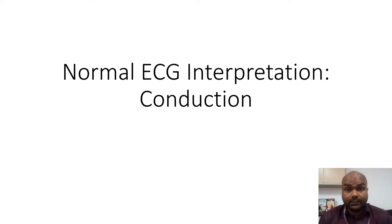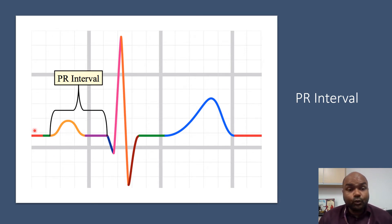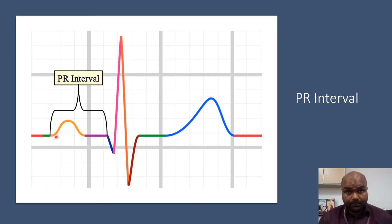Now let's move to step number three, which is conduction in normal instrument interpretation. The first interval we should look at is the PR interval, which is measured from the beginning of the P wave to the beginning of the QRS. It shows the conduction movement from the SA node to the AV node. The normal PR interval should be between three to five small boxes. If it's prolonged — more than five small boxes — we could be looking at a conduction problem in the AV node, which we call an AV block, either type 1 or type 2.